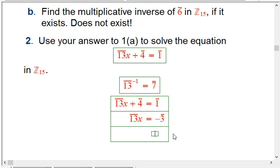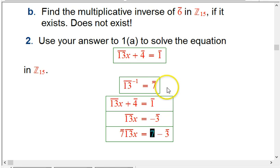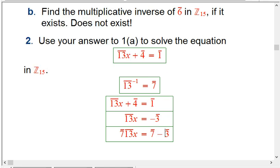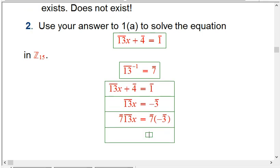Now, I'm going to multiply both sides. Let's take that equation. I'm going to multiply both sides by 7 bar. So, 7 bar times 13 bar is 7 bar times minus 3. It's not subtraction. It's times minus 3.